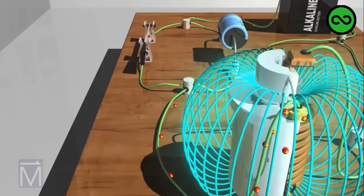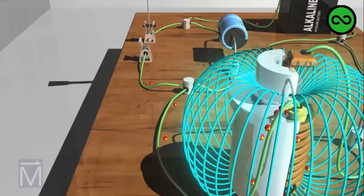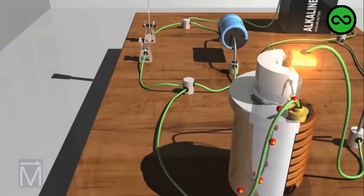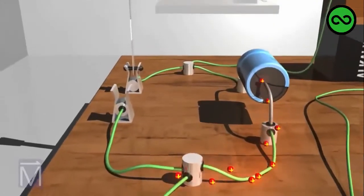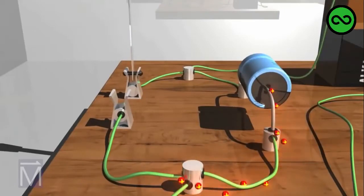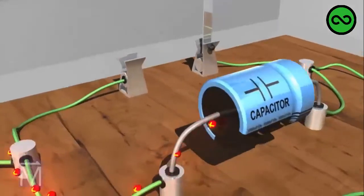When the knife switch opens and the field around the coil collapses, the collapsing field around the primary coil induces a surge of current, called back EMF, in the primary coil. This unwanted surge of electricity travels back toward the switch.